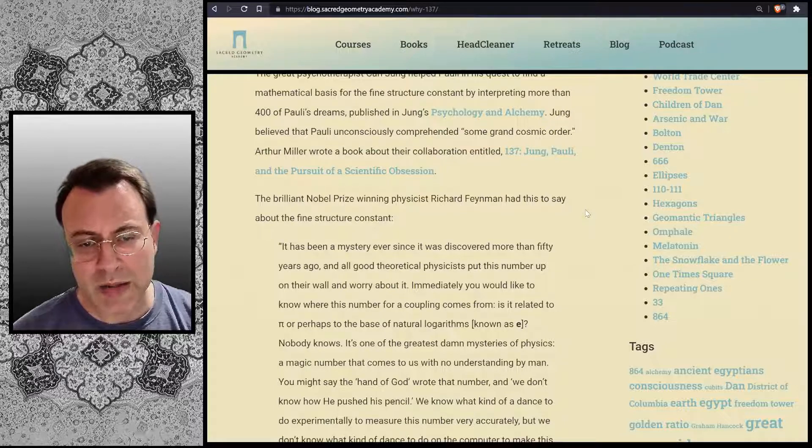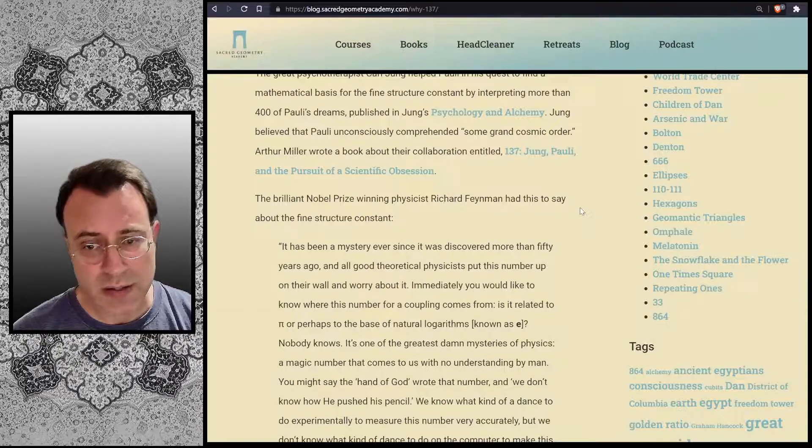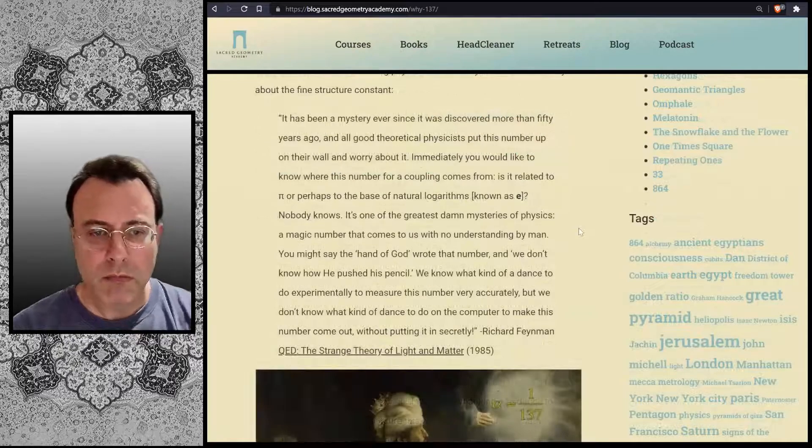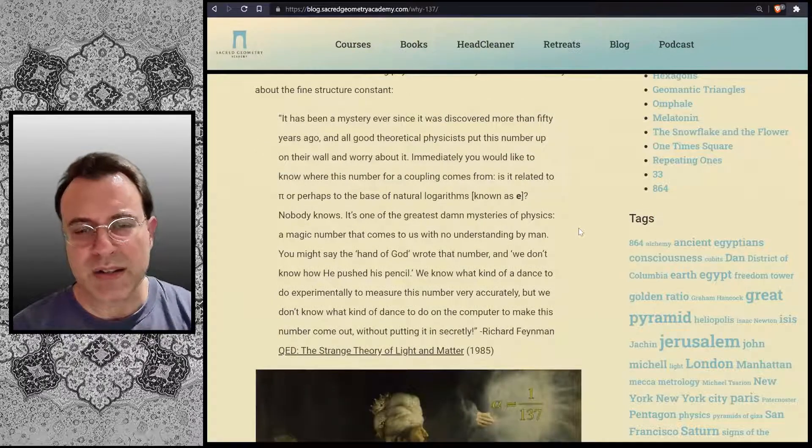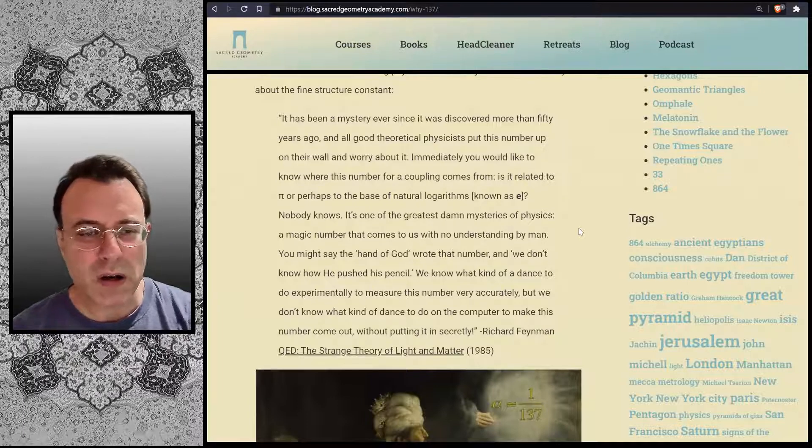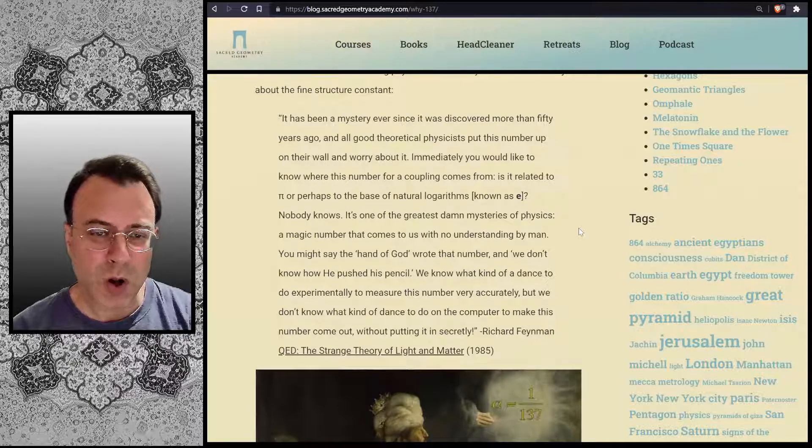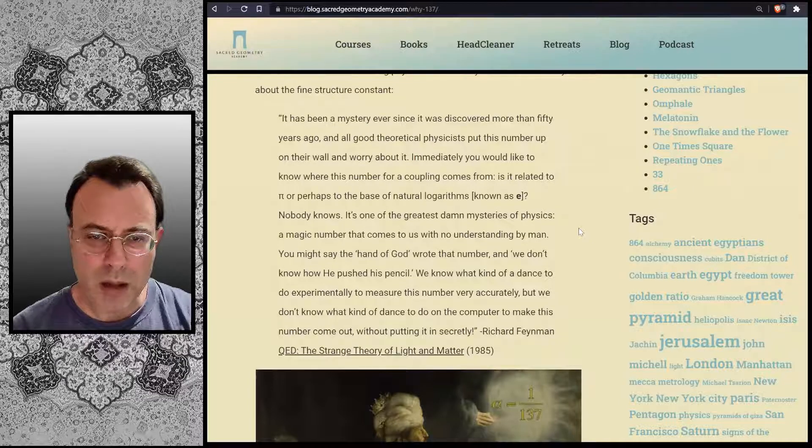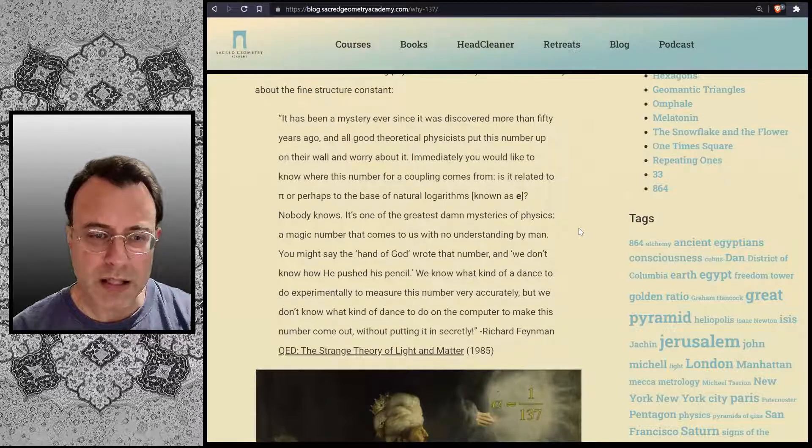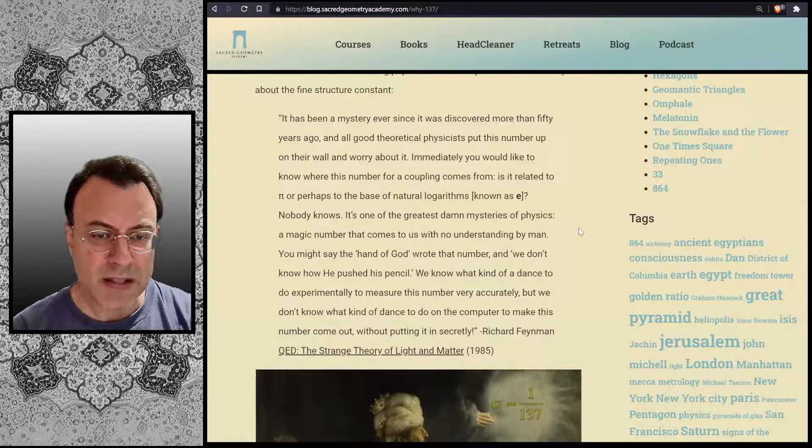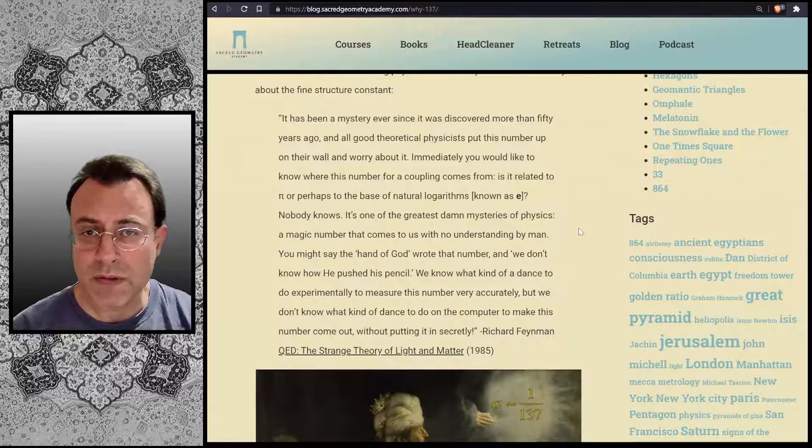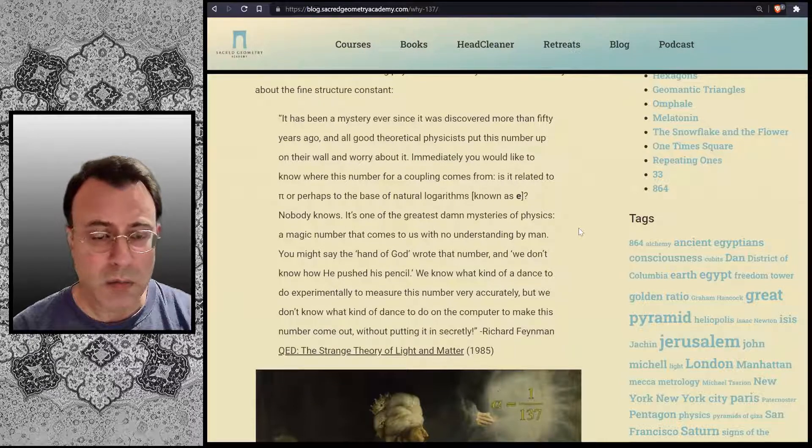The brilliant Nobel Prize-winning physicist Richard Feynman had this to say about the fine structure constant: "It has been a mystery ever since it was discovered more than 50 years ago, and all good theoretical physicists put this number up on their wall and worry about it. Immediately, you would like to know where this number for coupling comes from. Is it related to pi, or perhaps to the base of the natural logarithms, known as E? Nobody knows."